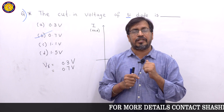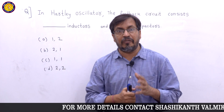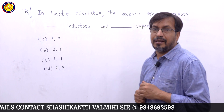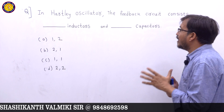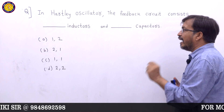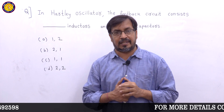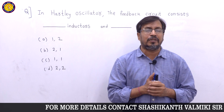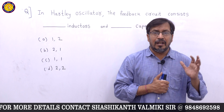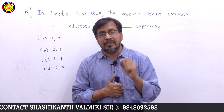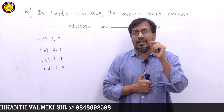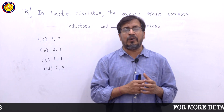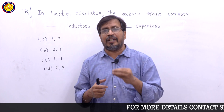Next, I am explaining one more previous question. The second question is about oscillators. In previous JLM questions, there is a question related to oscillators. Oscillators convert DC into AC using positive feedback. Types include RC phase shift oscillators, Hartley oscillators, and Colpitts oscillators.